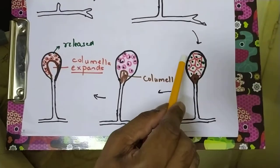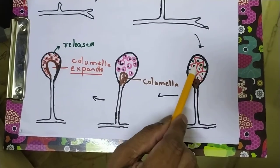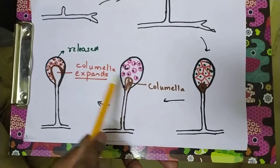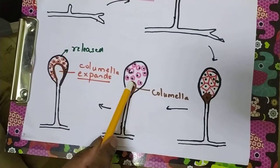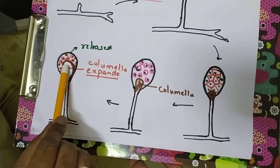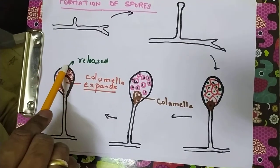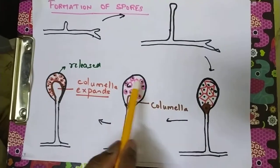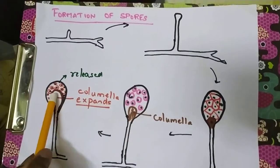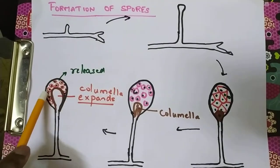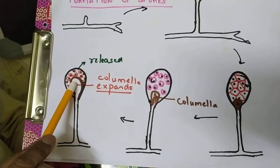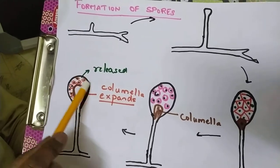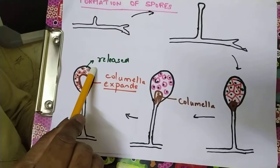Each bit with one nucleus gets rounded off into a spore. The columella keeps on expanding — it is a vacuolated region which keeps expanding and exerts pressure on the spore wall. Inside the sporangium you have the columella and spore sac. The columella exerts pressure on the sporangial wall.